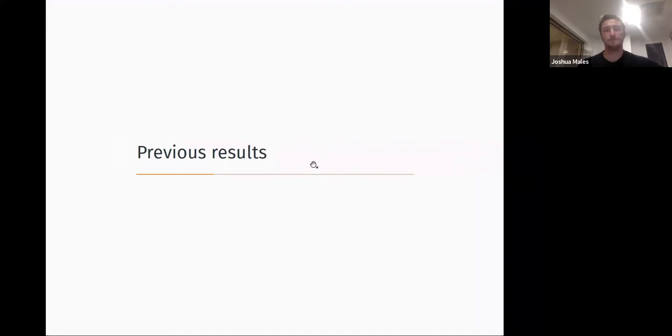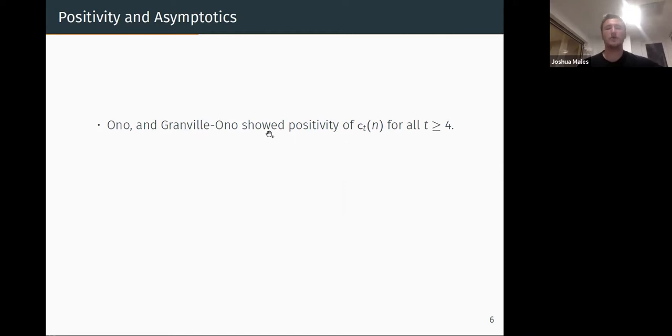So what was being known? So do they exist? Yes. Ono and Granville-Ono showed positivity of CT(n) for every t greater than 4. So whenever you take t greater than 4, every integer has a t-core partition. There are similar positivity results for SCT for most t, so t is 8 or t is greater or equal to 10. I said we concentrate on SC7, but there were not too many that are zero SC7 of n. So most of the time there are self-conjugate t-cores.